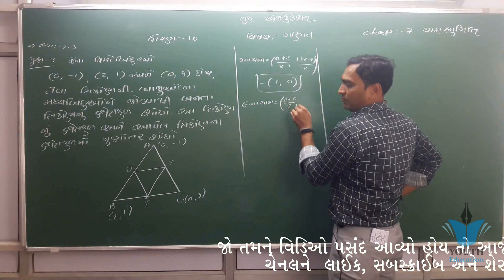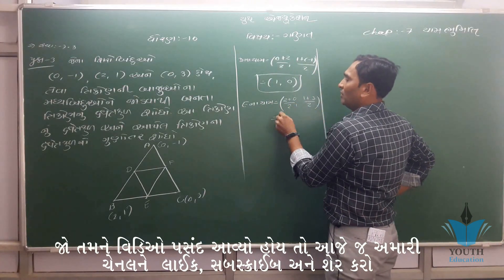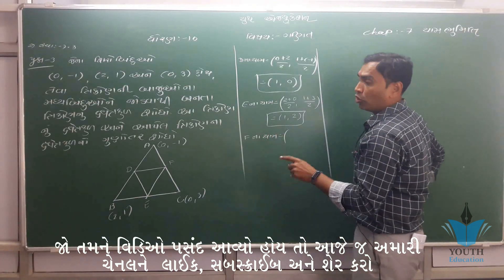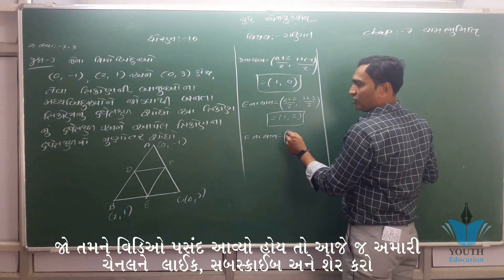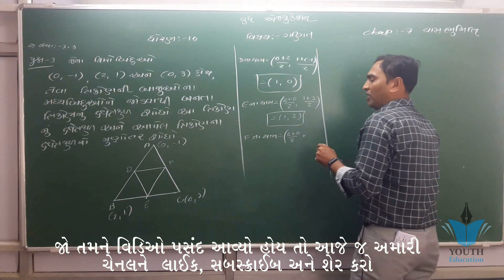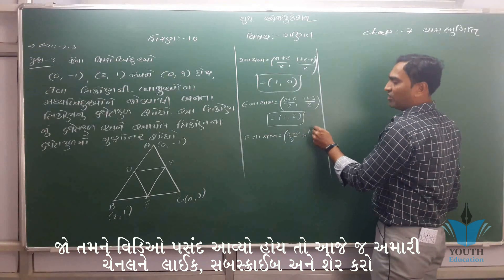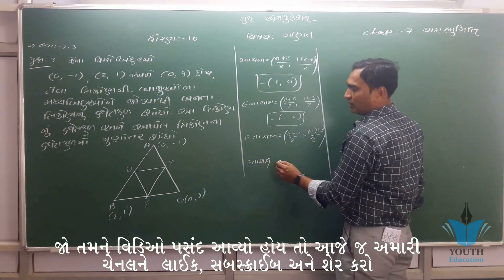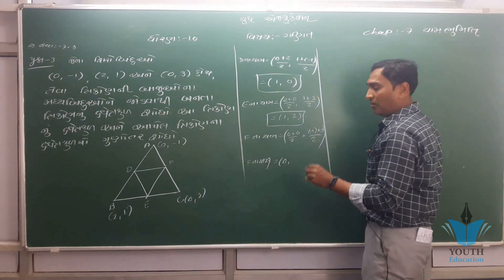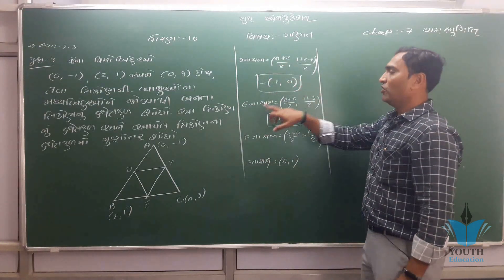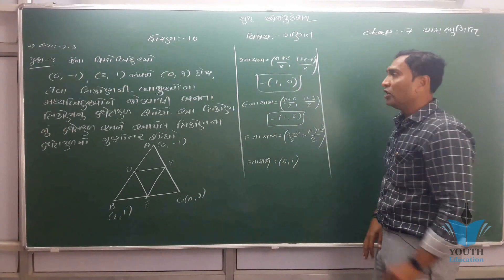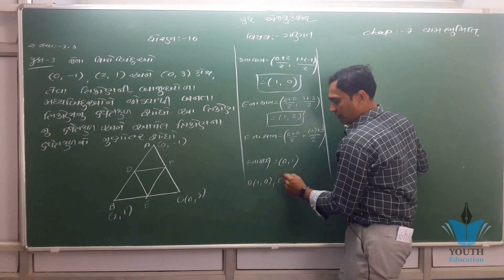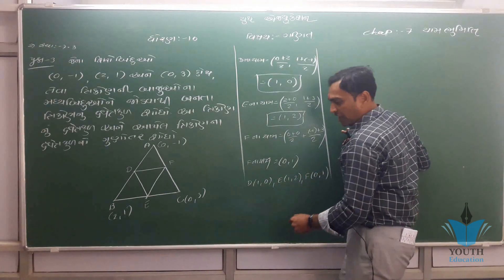2 વત્તા 0 છેદમાં 2. એક વત્તા 3 છેદમાં 2. F નાયાં: 0 વત્તા 0 છેદમાં 2, 0 વત્તા 3 છેદમાં 2. F નાયાં 0. D નાયાં મળ્યા 1,0. E નાયાં મળ્યા 1,2. અને F નાયાં મળ્યા 0,1.